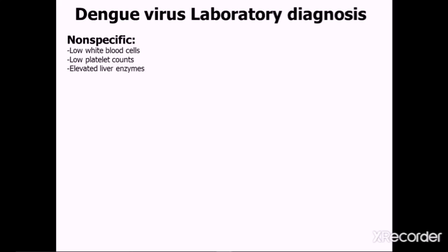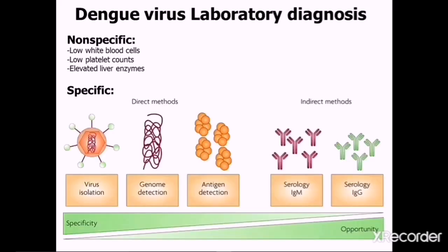For laboratory diagnosis of Dengue Virus, non-specific findings include leukopenia, thrombocytopenia, and elevated liver function tests. Specific methods include viral isolation and serotype identification within one to five days of disease by mosquito or cell culture, or by PCR. Genome detection by nucleic acid detection using PCR is also performed within one to five days and is commonly done in labs. Antigen detection with NS1 — a non-structural protein — can be done within one to six days of disease using ELISA.